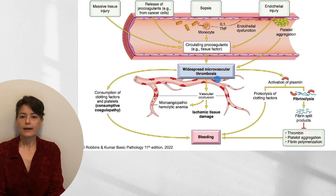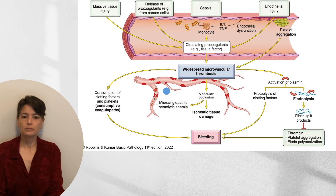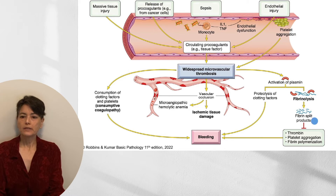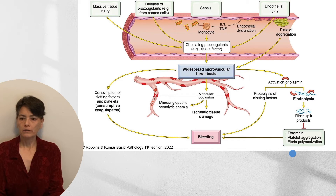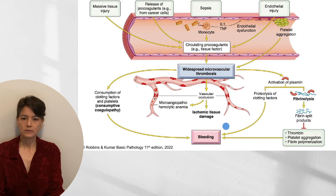The thrombi cause vascular occlusion leading to ischemic tissue damage, and as they clog vessels, we see microangiopathic hemolytic anemia — red blood cells shoved through the thrombi yielding schistocytes. Once more, as thrombi form, the body activates anticoagulant mechanisms: plasmin is activated, beginning fibrinolysis and yielding fibrin split products. This fibrinolysis also inhibits thrombin, platelet aggregation, and fibrin polymerization — all procoagulant processes — driving the patient further towards bleeding. Plasmin also acts on proteolysis of clotting factors.